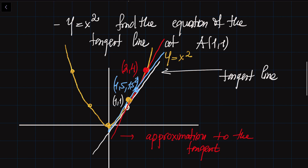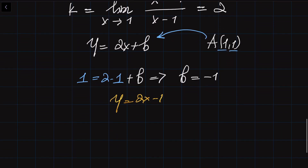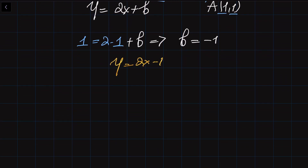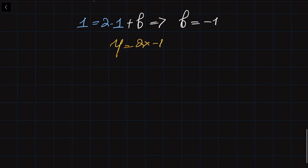The equation of the tangent line is going to be Y is equal to 2X minus 1. So we can find the equation of a tangent line which just touches the curve at a single point using limits. In general, the tangent line represents the rate of change of the curve, and limits are very useful to find tangent lines.